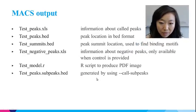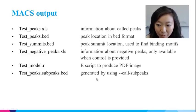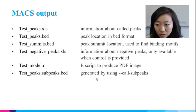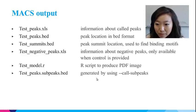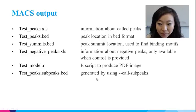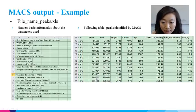Now let's look at the output files MACS gives. The most useful files are the Excel spreadsheet and the peaks BED file. The spreadsheet summarizes the given and default parameters and the complete list of peaks. The BED file contains the same information in BED format and can be uploaded to Genome Browser for visualization and inspection. The summits BED file gives the location of the peak summits, which is useful to find binding motifs. The negative peaks spreadsheet gives a list of peaks identified from the control dataset compared with the treatment. MACS also generates an R script that can be loaded directly into R to plot the statistical model based on the input data. The subpeaks BED file is generated using the '--call-subpeaks' parameter and gives the chromosome coordinates of the subpeaks.